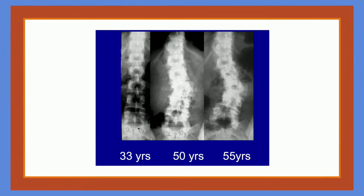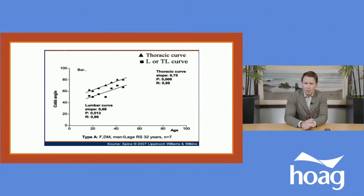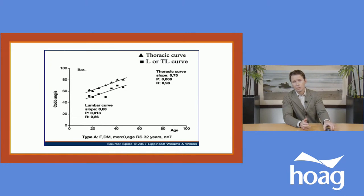We can see an example in one patient with pictures taken at ages 33, 50, and 55 — showing clear progression of the deformity over this time frame. A graph from the spine journal charts patients with thoracic or thoracolumbar-lumbar curves and their progression over time. The rough estimate I provide to patients is that curves can progress one to three degrees per year; however, circumstances such as significant changes in health, bone quality, muscle mass, and other issues can accelerate this process.